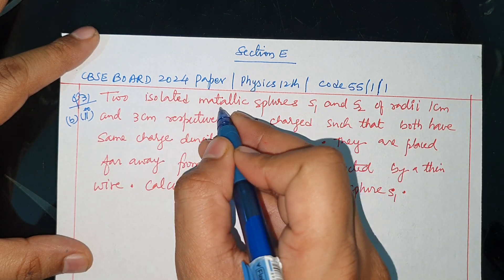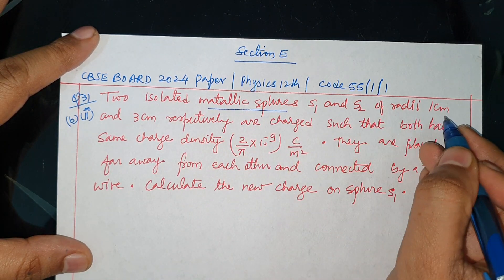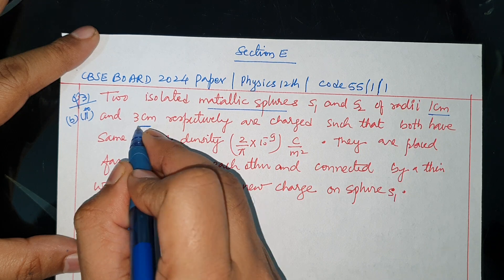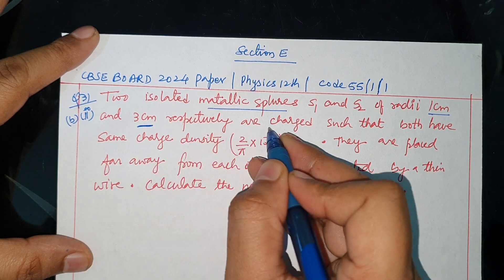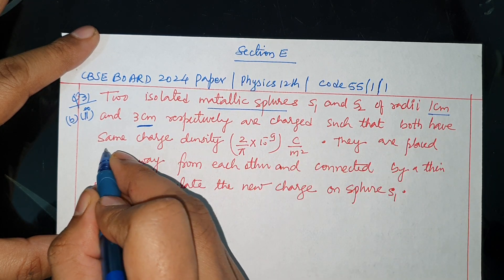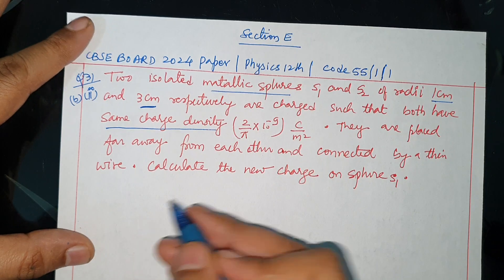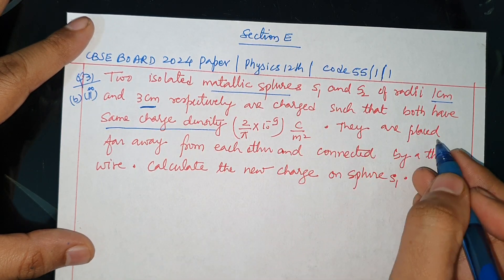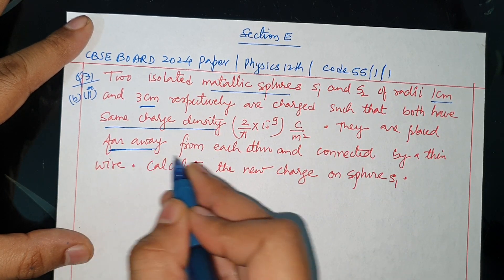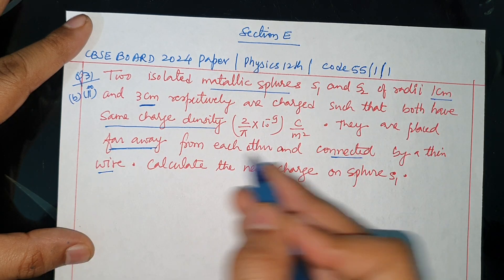Two isolated metallic spheres S1 and S2 with radii 1 cm and 3 cm respectively are charged such that both have the same charge density sigma (C/m²). They are placed far away from each other and connected by a thin wire.